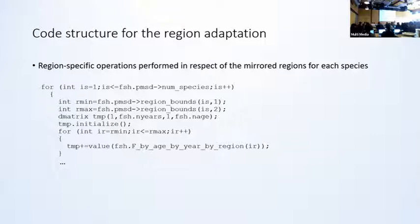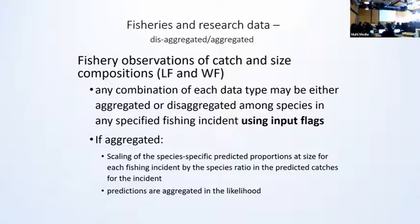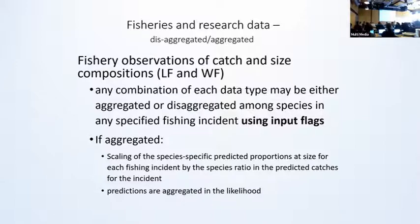Where operations are performed in respective regions, the class member pointer — in this case region bounds — indicates over which regions these operations are to be performed, so that you can identify for which species these operations relate to. Needless to say, this added a lot of complexity to the code. To be entirely generic, it was necessary to allow for every possible combination of the data being either aggregated or disaggregated with respect to species in any particular fishing incident. This was achieved by adding flags to each record of the fisheries data, indicating its status as being aggregated or disaggregated for any combination of catch, length frequency, and weight frequency for that particular incident.